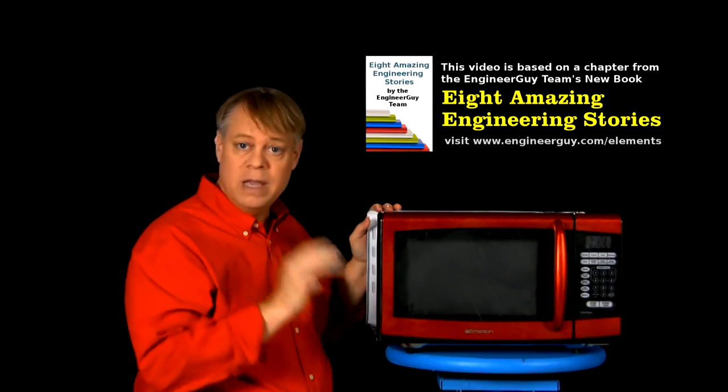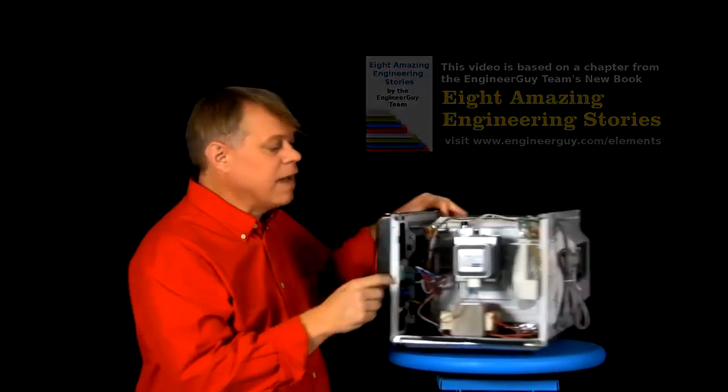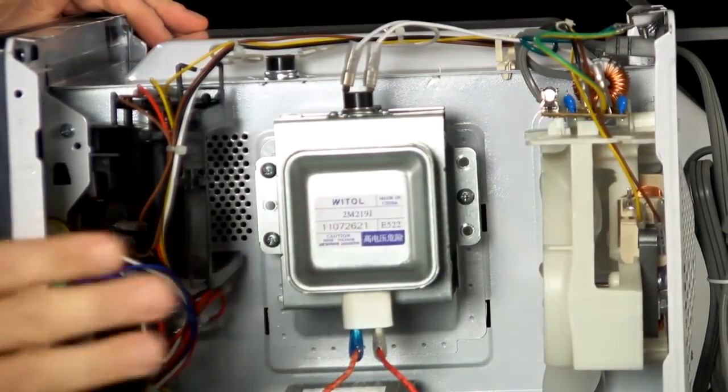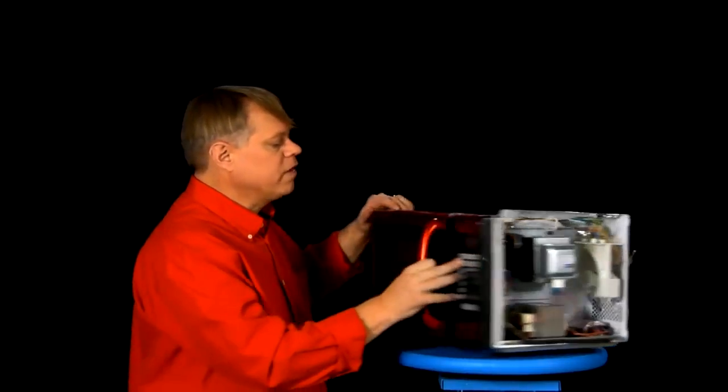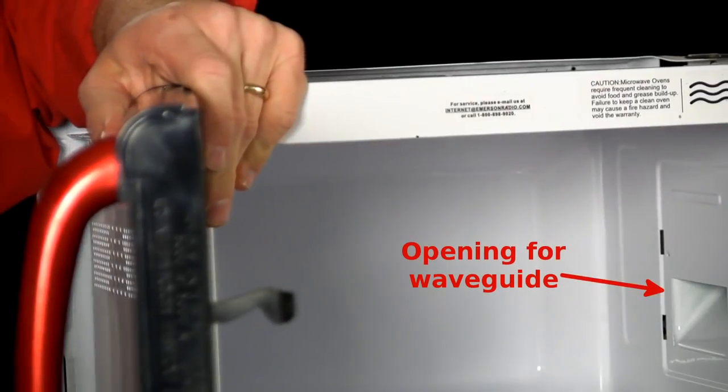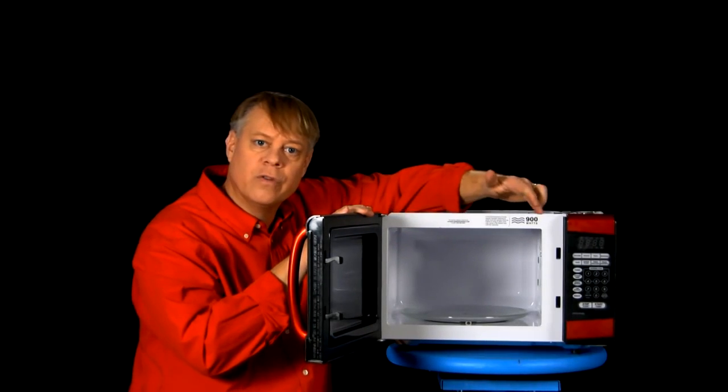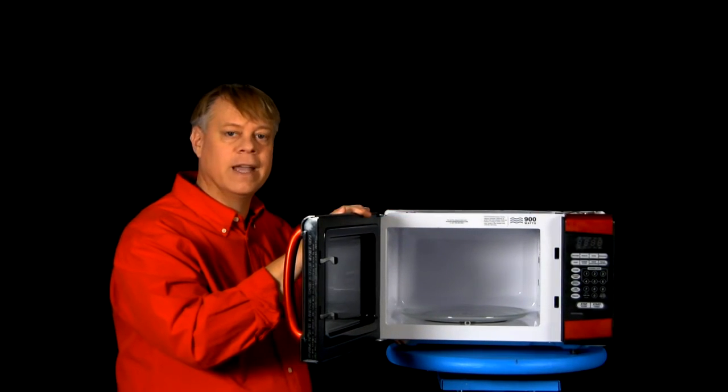Now a microwave contains three main components. A vacuum tube called a magnetron, it generates the energy that heats food, a waveguide hidden in the wall to direct that energy to the food, and a chamber to hold the food and safely contain the microwave radiation.